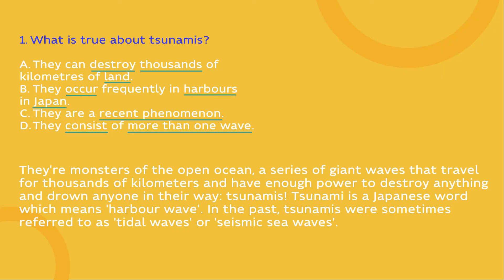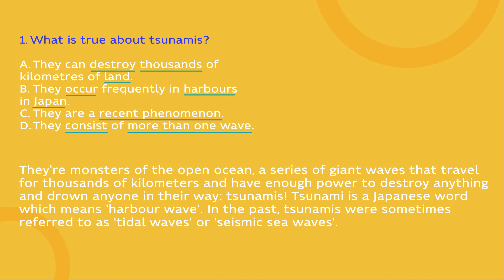Ready for reading? Let's get started with the first question. Look through the underlined words — we should find which option corresponds to the text. You know that all of them can be found there. Read the first paragraph. Is there anything about thousands of kilometres of land? Yes, in the second line — but was it about destroying? No — it says waves that travel. So option A is wrong; I'll cross it out.